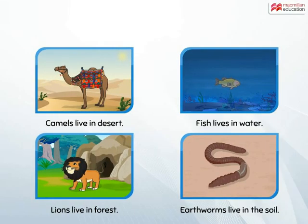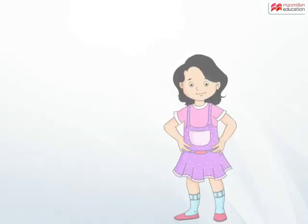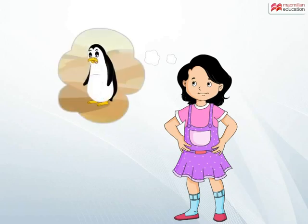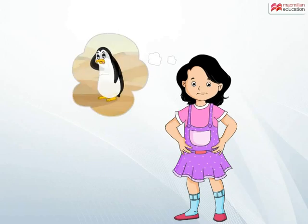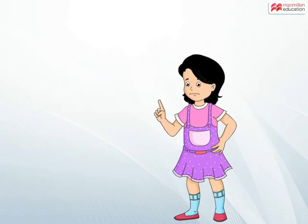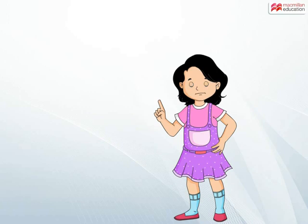All living things live and grow in a place suitable for them to feel safe, find food and reproduce. Can you spot a penguin in a desert? Well, no, because it cannot survive in heat.